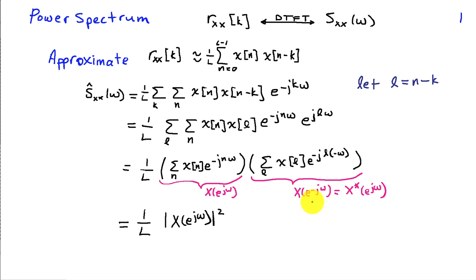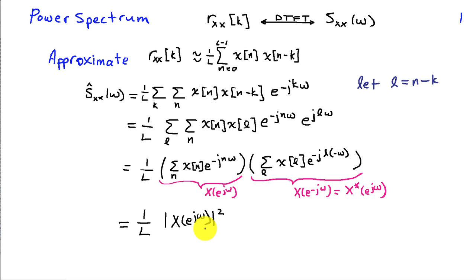Using the properties of the discrete time Fourier transform — specifically that it's conjugate symmetric — x of e to the minus j omega is the same as x conjugate of e to the j omega. So this approximation of the correlation sequence leads to an estimate of the power spectrum given by 1 over L times the magnitude squared of the discrete time Fourier transform of the L-point time series x of n. So we take the DFT of our length L data, take the magnitude squared, divide by L, and that approximates the power spectrum. That's called the periodogram.